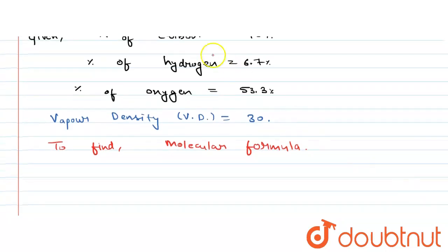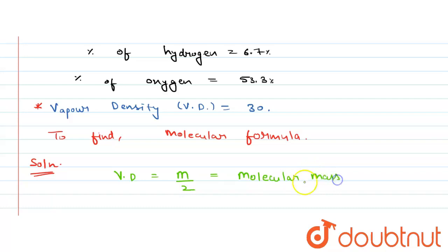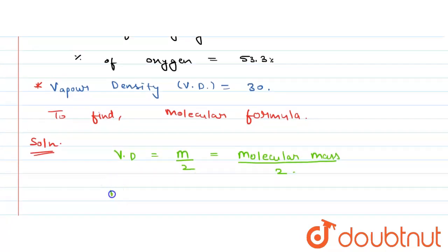First we will try to find the molecular mass of the compound. For this we will use vapor density. The formula of vapor density is: VD = M/2, where M is the molecular mass. So molecular mass M = 2 × 30 = 60.